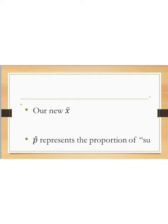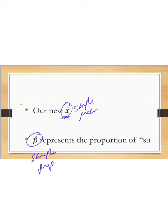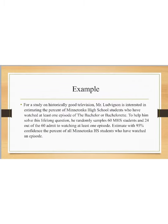Our new X-bar in this lesson is P-hat. X-bar is the sample mean, whereas P-hat is the sample proportion, which I referenced in the sampling distribution unit as well. Here's an example that will drive us through the rest of this lesson.